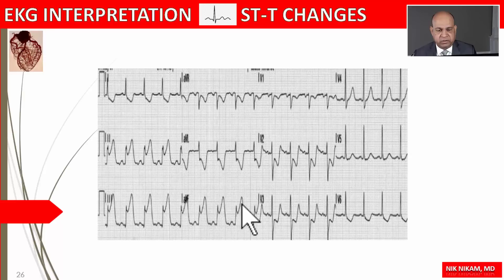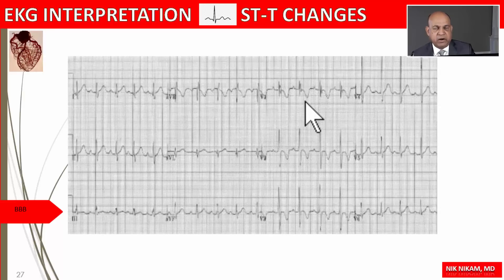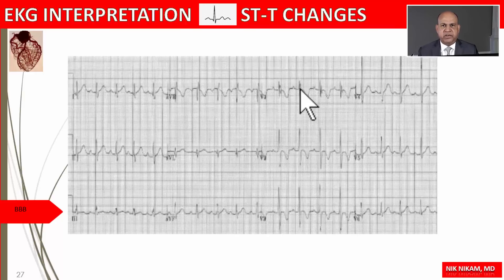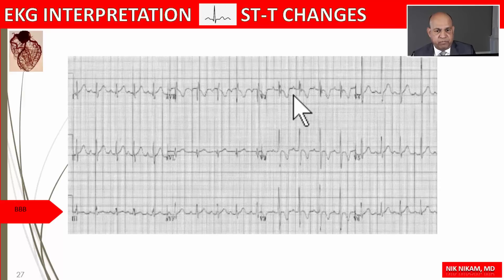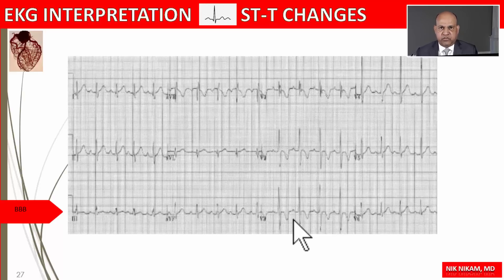Here we have a right bundle branch block, and along with the bundle branch block we commonly see ST-T changes that are discordant to the direction of the QRS complex — similar to what we saw in left bundle branch block. There is down-sloping ST segment along with T wave inversion. On the other hand, if these T waves are upright and there is ST elevation, that may suggest acute myocardial ischemia even in the presence of bundle branch block. Whenever you see a bundle branch block, expect discordant ST-T changes.